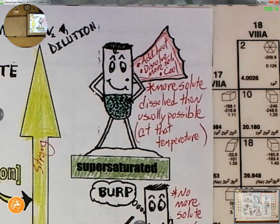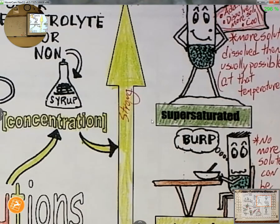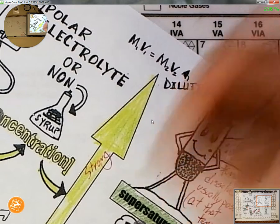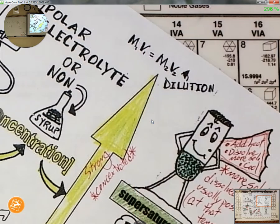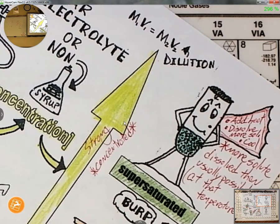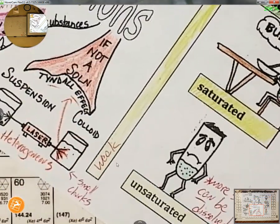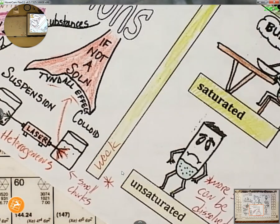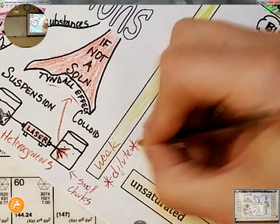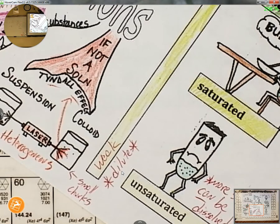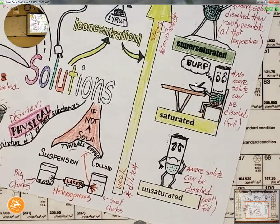We've got a couple more vocabulary words here. The steps for making a supersaturated solution are basically three: add heat, dissolve more solute, and let it cool. If a solution is really strong, we say it is concentrated. If it is really weak, we say it is diluted. So if it's strong, it's concentrated; if it's weak, it's diluted.